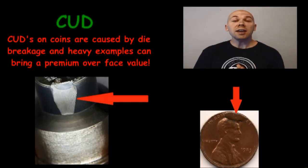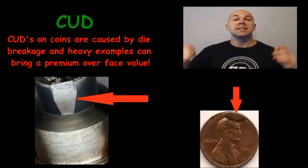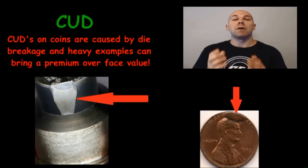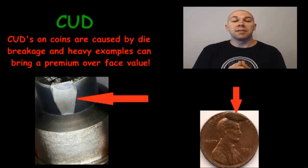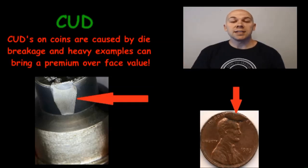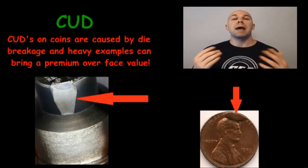Cud. A cud on a coin will resemble a blob above the field of the coin and involves the rim, as seen on this Lincoln cent right here. Cuds are actually the result of a break in the die — an actual piece of the die is missing. They can come in various shapes and sizes, and depending on the location, they can also cover up the design and inscription on the coin. These are mint errors and they can sell for a premium over face value, especially with more dramatic examples.